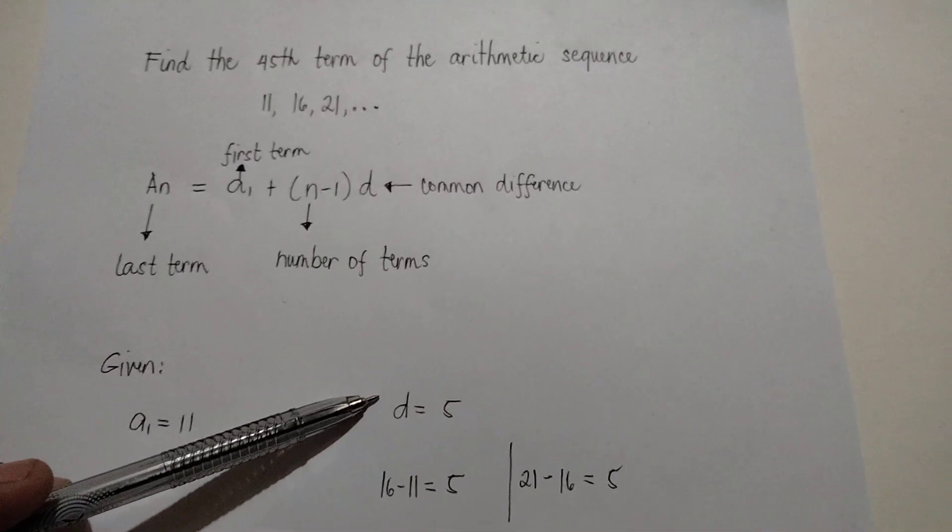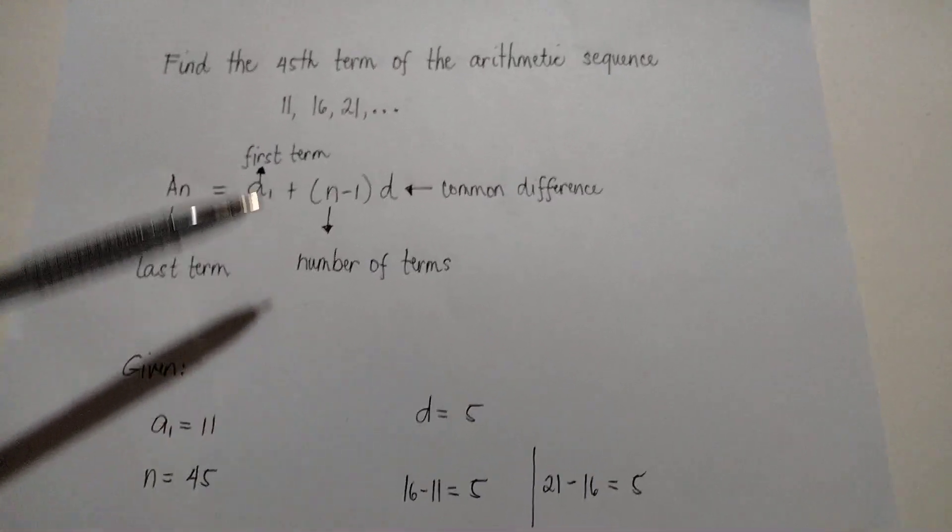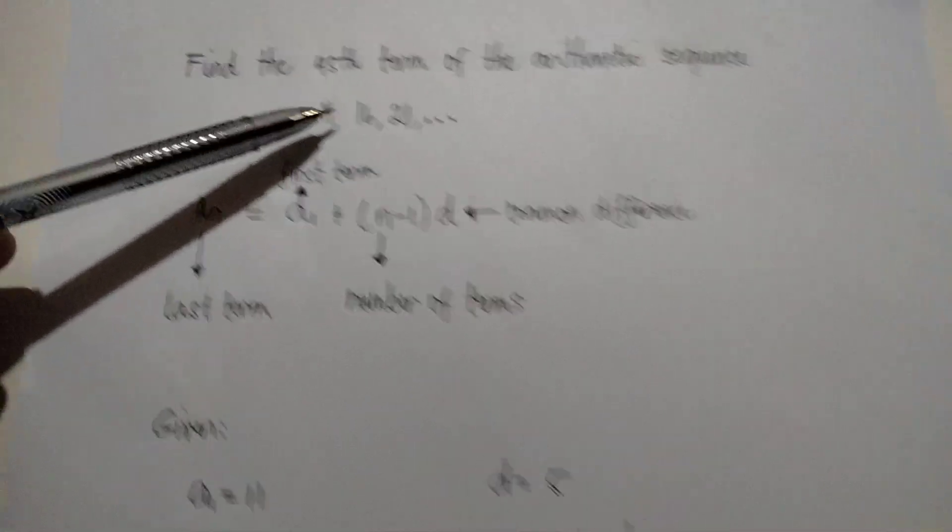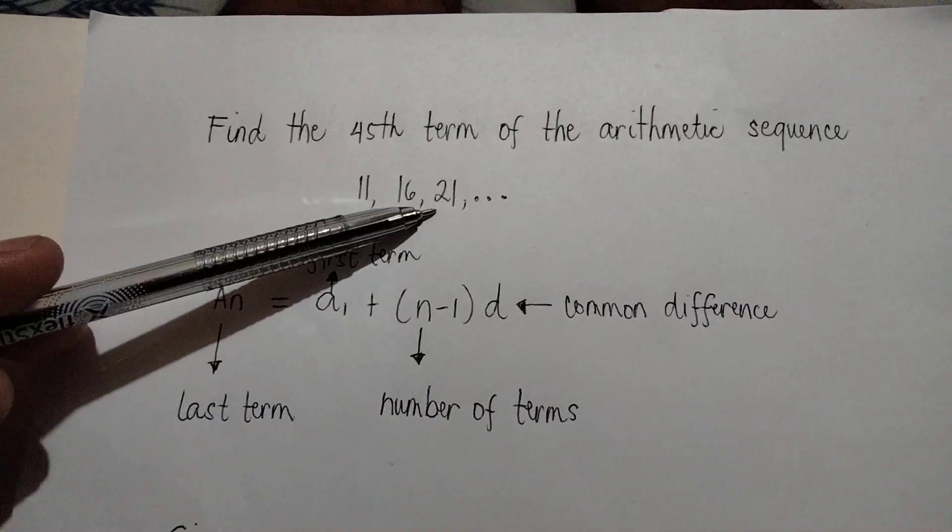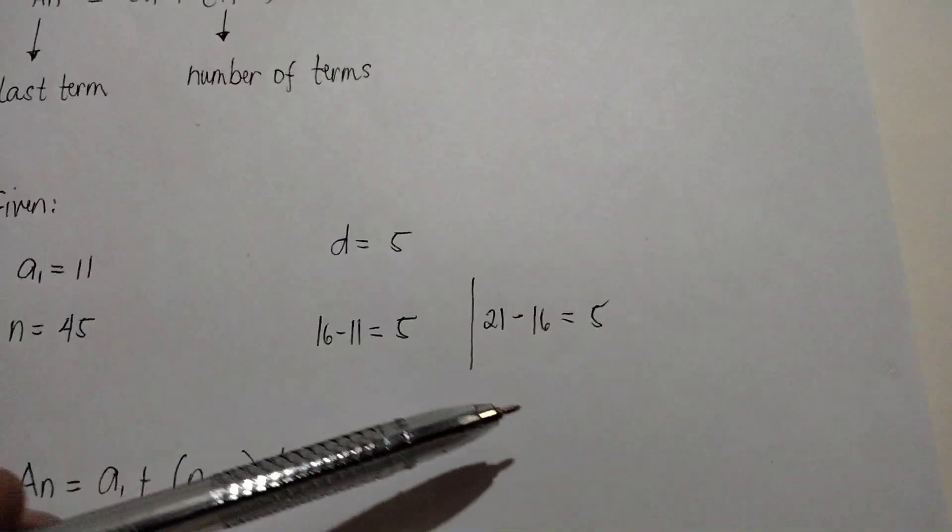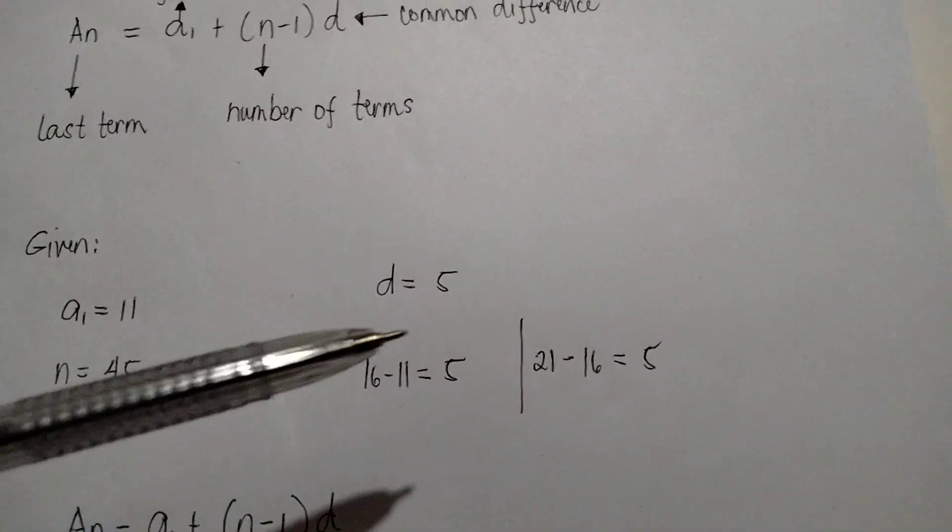The common difference is 5. We just subtract the two consecutive terms. 16 minus 11 is 5. 21 minus 16 is 5. So, the common difference is 5.